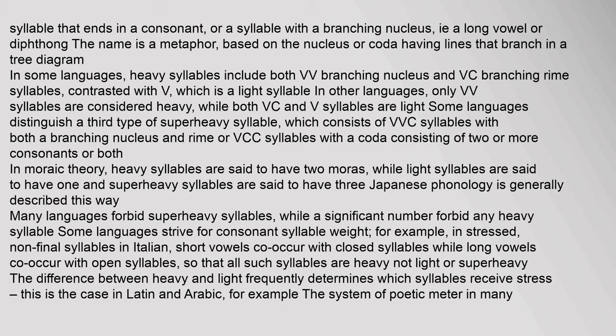Some languages distinguish a third type: the super-heavy syllable, consisting of VVC syllables with both a branching nucleus and rhyme, or VCC syllables. In moraic theory, heavy syllables are said to have two moras, light syllables one, and super-heavy syllables three. Many languages forbid super-heavy syllables, while a significant number forbid any heavy syllable. The difference between heavy and light frequently determines which syllables receive stress — this is the case in Latin and Arabic. The system of poetic meter in many classical languages such as Classical Greek, Latin, Old Tamil, and Sanskrit is based on syllable weight rather than stress.